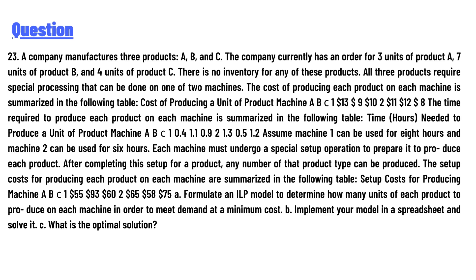The company currently has an order for three units of product A, seven units of product B, and four units of product C. There is no inventory for any of these products. All three products require special processing that can be done on one of two machines.